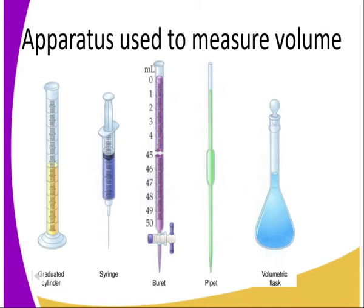Let's start with apparatus used to measure volume. On our screen you can see we have a measuring cylinder — a graduated measuring cylinder — that is one of the apparatus used to measure volume. We also have a syringe, a burette, a pipette, and a volumetric flask. These are apparatus used to measure exact volume of liquids.